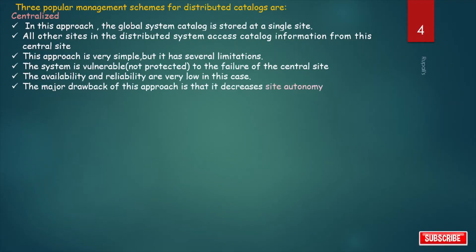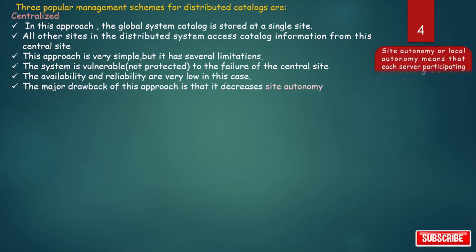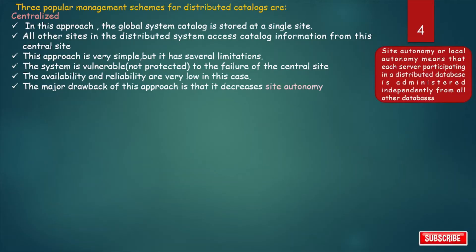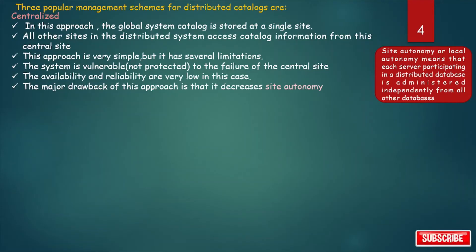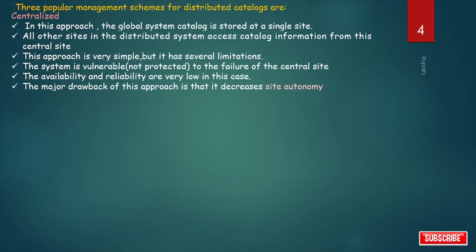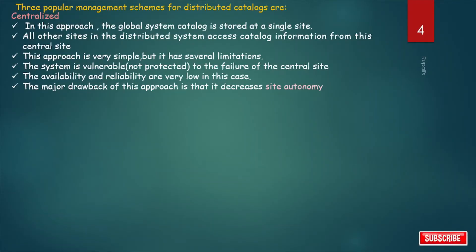The major drawback of this approach is that it decreases site autonomy. Site autonomy means local autonomy — each server participating in a distributed database is administered independently from all other databases, so each site has its own local control. In centralized catalog management, because the global system catalog is stored at a single site, site autonomy is decreased.